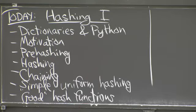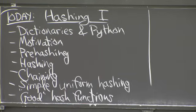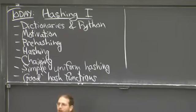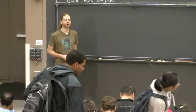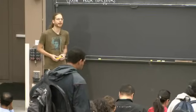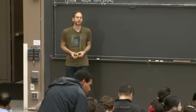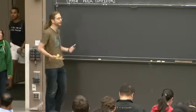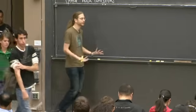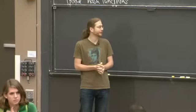All right, let's get started. Today we start a brand new section of 6.006, which is hashing. Hashing is cool. It is probably the most used and common and important data structure in all of computer science. It's in basically every system you've ever used. And in particular, it's in Python as part of what makes Python fun to program in. Basically every modern programming language has it.